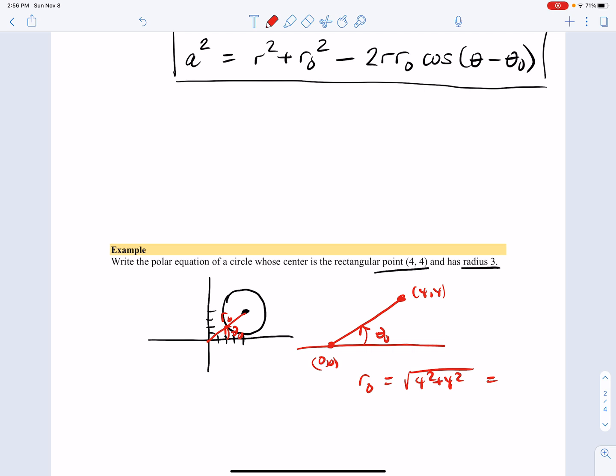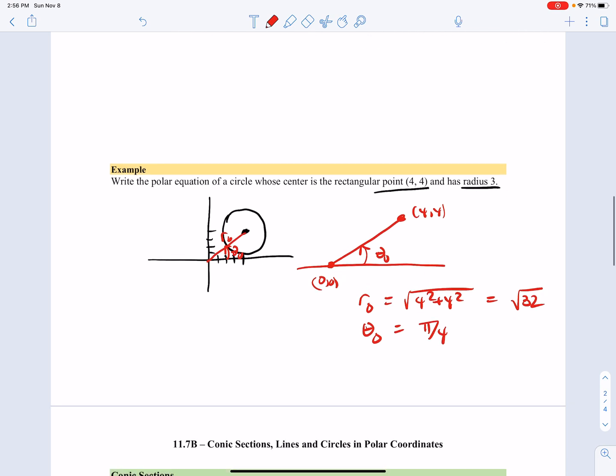But because we're going to be squaring it, I'm just going to leave it as the square root of 32. And theta zero, by inspection, if you go over as much as you go up, that's a 45 degree angle. So I'm going to say theta zero is pi over four.